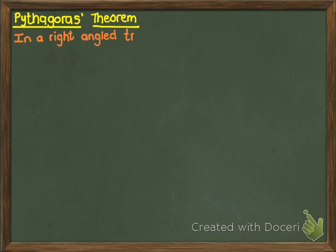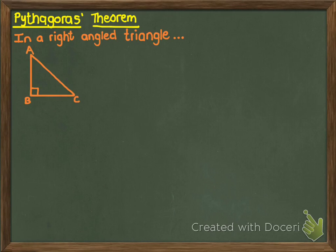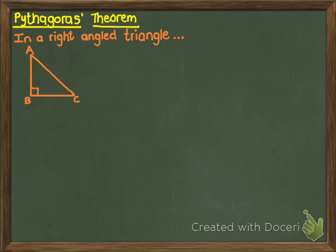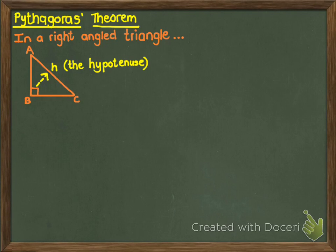It says: in a right-angled triangle — that's the most important thing. When you are trying to use Pythagoras' Theorem, you have to see a right-angled triangle, otherwise you cannot use this theorem at all. You can tell it's right-angled — in triangle ABC there's a little block at B, which means that's a right angle. Now in a right-angled triangle there's something called the hypotenuse. The hypotenuse is the longest side, and it's always opposite the 90-degree angle.